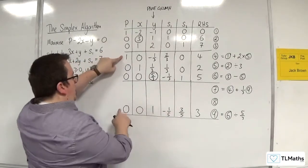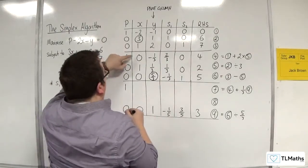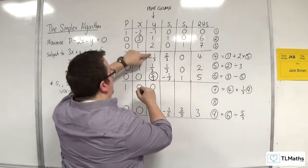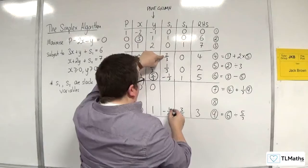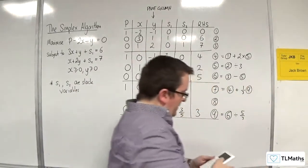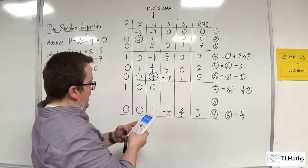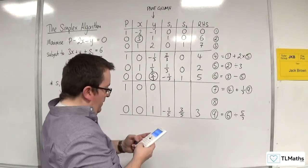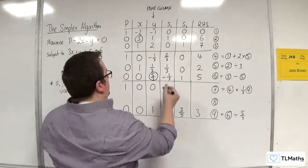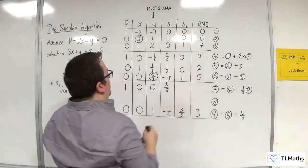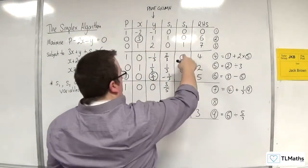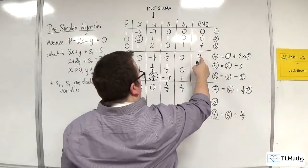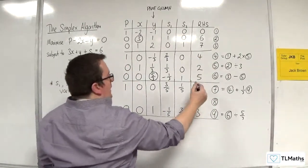So 1 plus 1 third of 0 is 1. 0 plus 1 third of 0 is 0. Minus 1 third plus 1 third of 1 is 0. 2 thirds plus 1 third of minus 1 fifth is 3 fifths. And then 0 plus 1 third of 3 fifths is 1 fifth. And then 4 plus 1 third of 3 is 5.